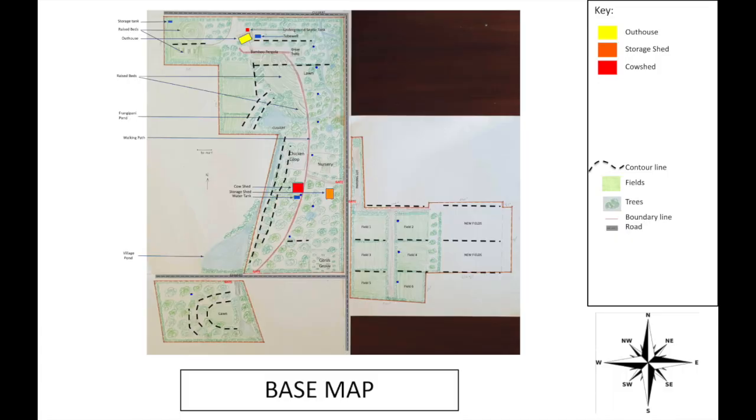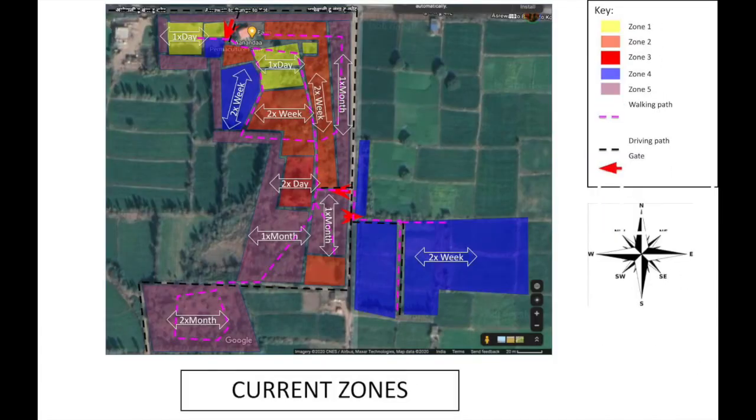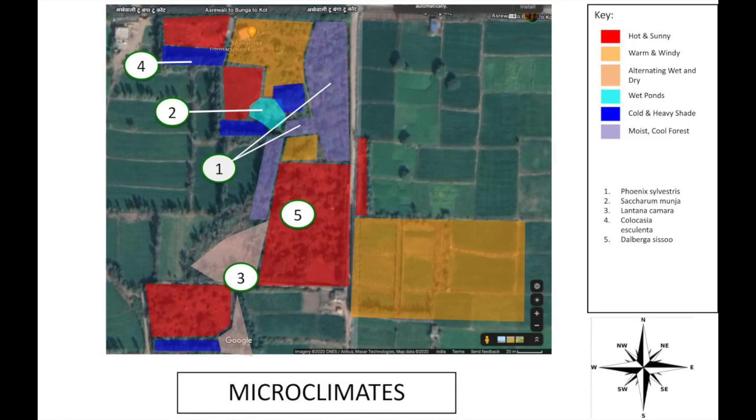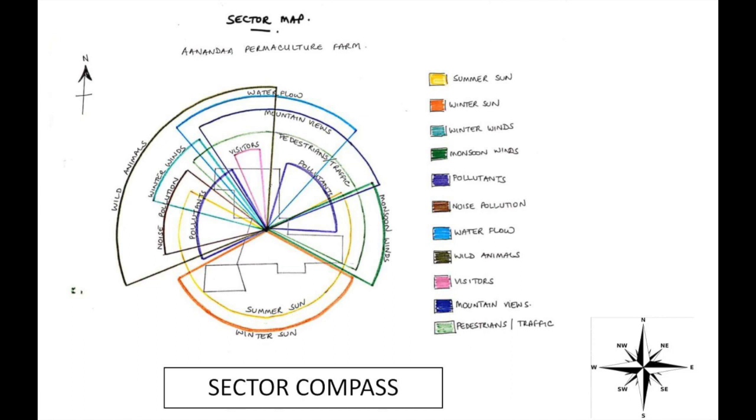You will learn how to gather primary and secondary data. You will learn to create a base map and overlays of water, zones, microclimates and soil. You will learn to do a sector analysis of elemental flows and get valuable insights to design your project.